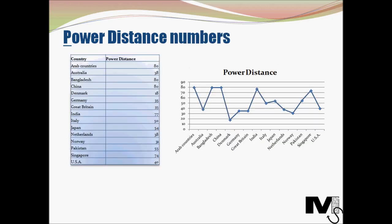Let's look at some numbers. These countries are a selection extracted from Hofstede's data. It's interesting to observe that countries like Bangladesh, China, and the Arab countries score very high on power distance, while Denmark is on the other end of the spectrum with the least power distance.